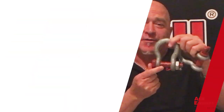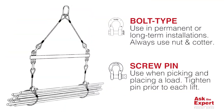A screw pin shackle is used for temporary applications, and the bolt, nut, and cotter is typically used for long-term or permanent applications. In this example, the rigger is connecting to the steel pipes below using two screw pin shackles. The load is then moved to another location where the screw pin shackles are disconnected from the load. This is considered a temporary application.